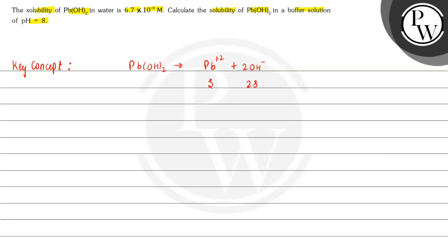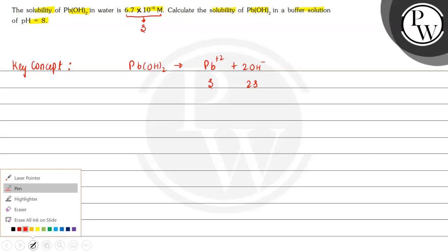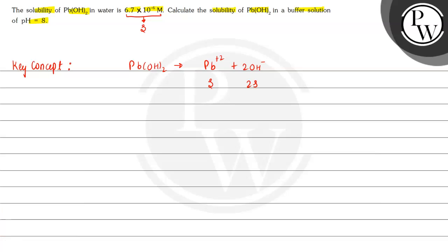The solubility is given as 6.7 × 10⁻⁶, which is nothing but S. From this we can find the value of the solubility product, Ksp. This is equal to the molar solubility of Pb²⁺ multiplied by the molar solubility of OH⁻ squared, which equals S × (2S)², that is 4S³.